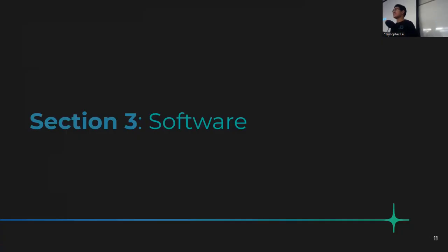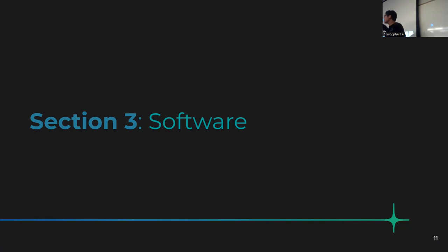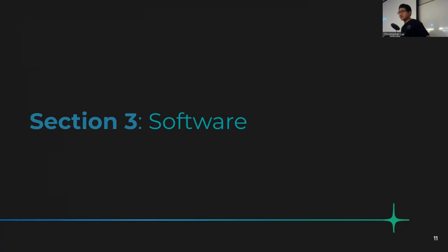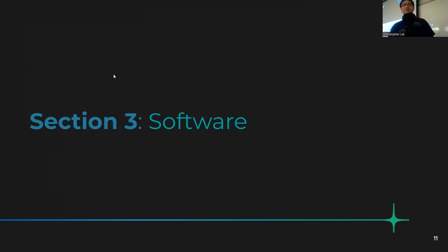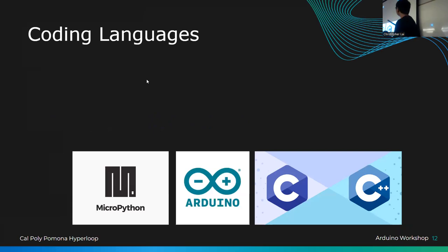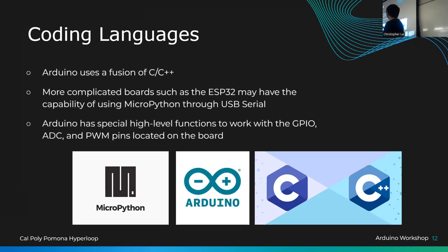We're on section three — there are seven sections total. We're moving to software, which is the focus of today's lab. It's mostly a programming workshop with some hardware components. Arduino code is a fusion of C and C++, with additional Arduino-specific commands that allow you to interface with the GPIO pins. More complicated boards like ESP32 use MicroPython, but I prefer C/C++ because it has special high-level functions for GPIO, ADC, and PWM pins.